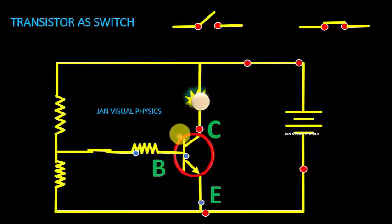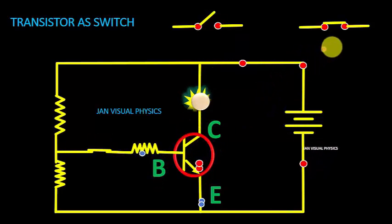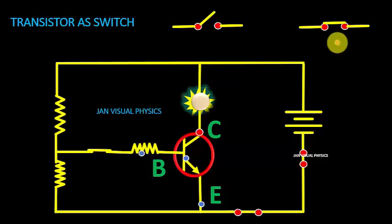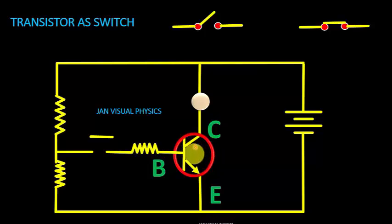What happens inside a transistor when it behaves like an on switch or off switch? This is covered in a separate video: the anatomy of a transistor as a switch.